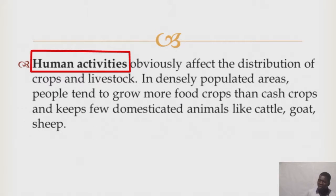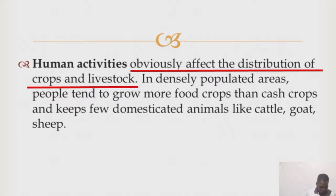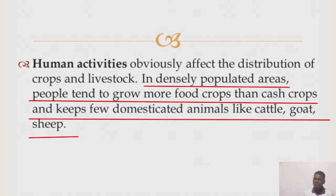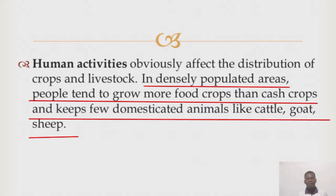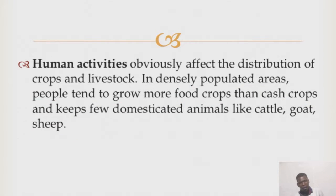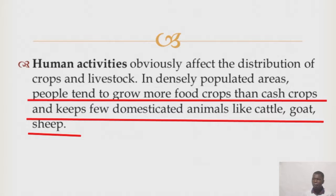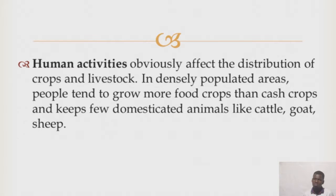Another factor is human activities, which obviously affects the distribution of crops and livestock. You find that the population pressure on land tries to dictate the type of crop or animal to be reared. In most places where there is a very high population, people tend to grow food crops compared to rearing animals or growing cash crops. Examples of food crops include millet, sorghum, cassava, beans, and potatoes.